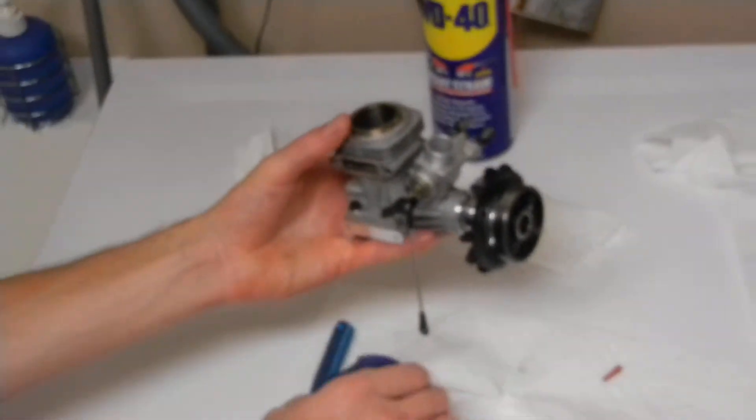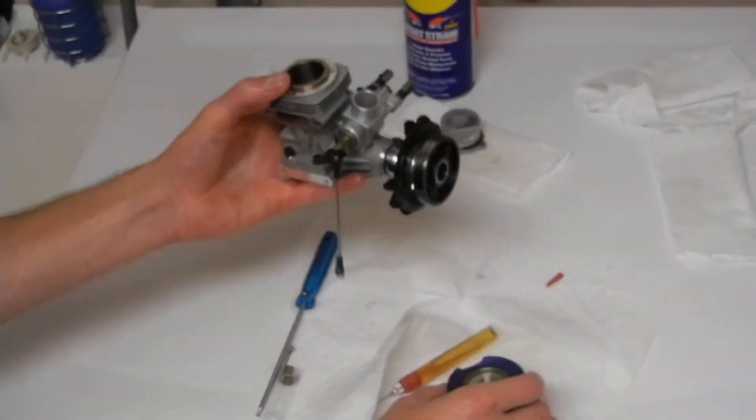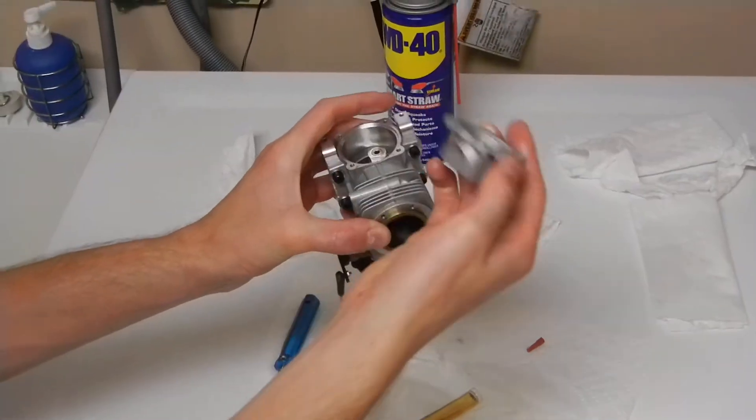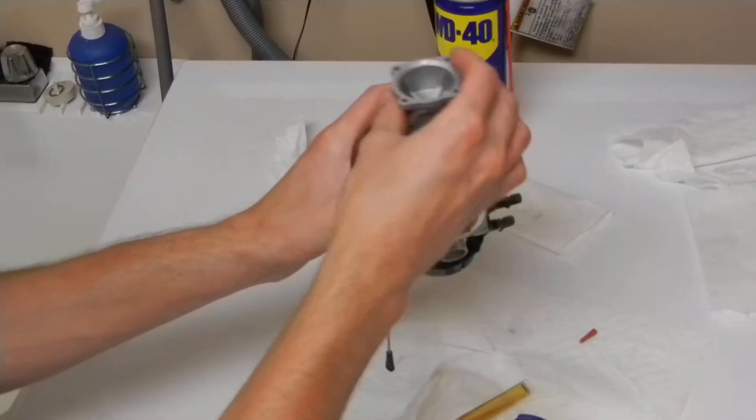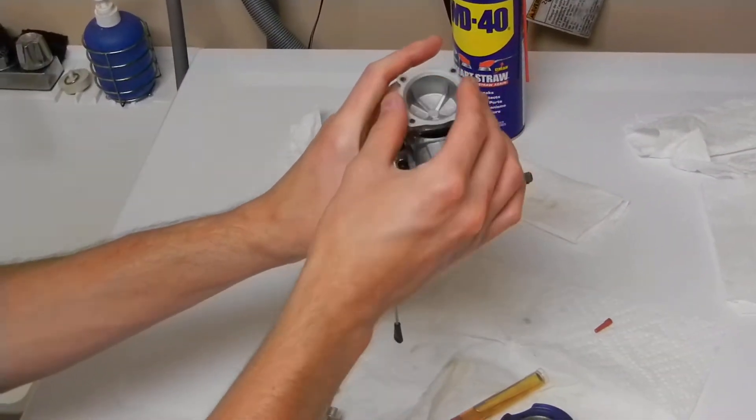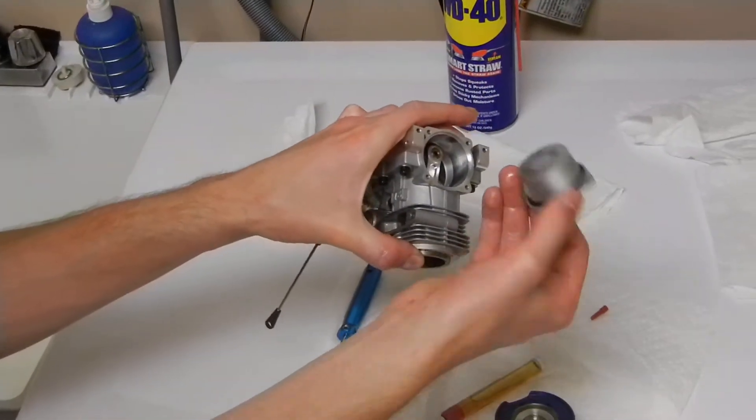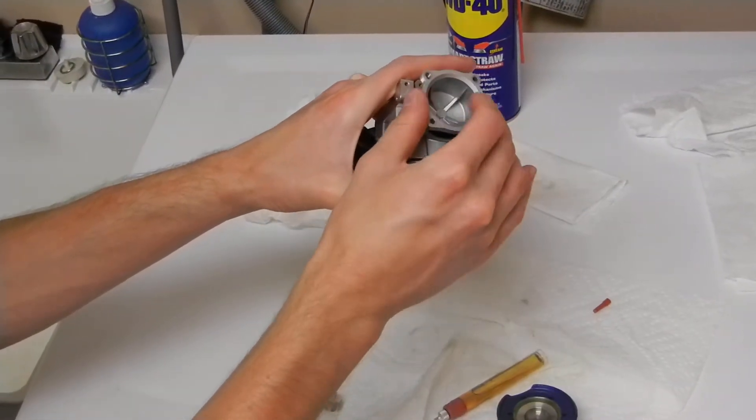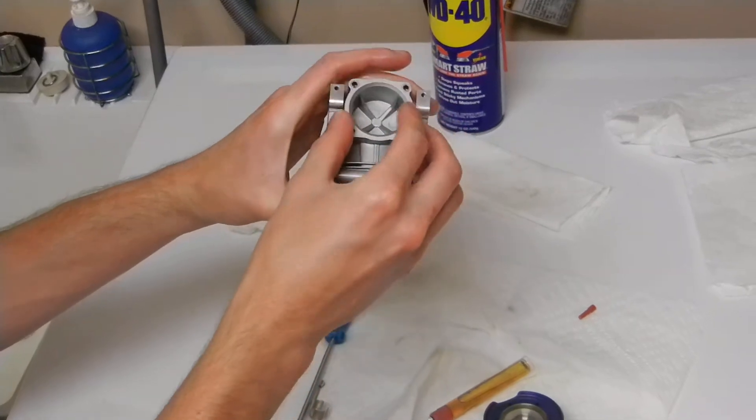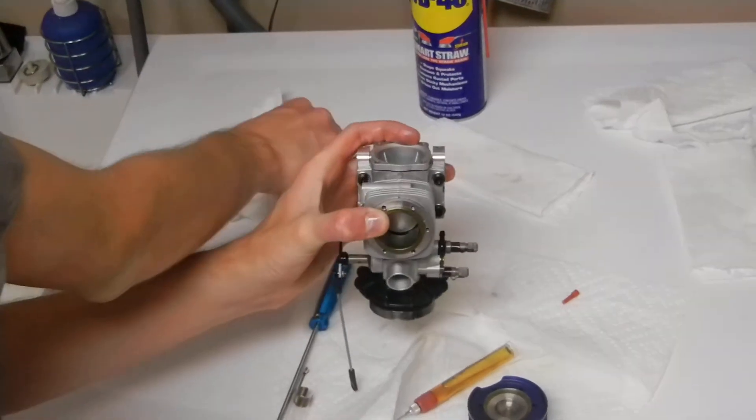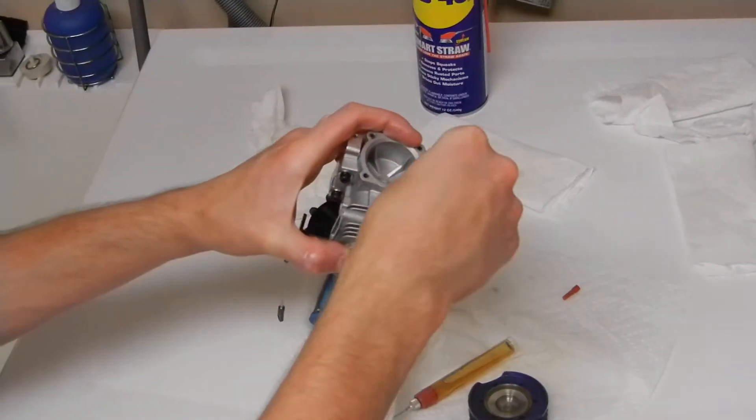So next thing to do is now you can put your back plate, which is this. Make sure that this little groove, this bit, is up on the top. Make sure your O-ring is oiled. Everything is oiled in there. Slip that on. Next thing to do is tighten these bolts down.